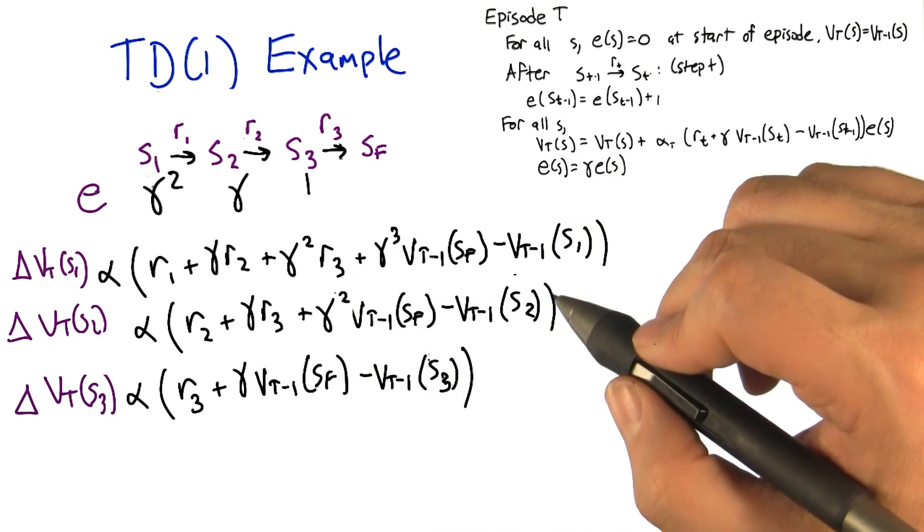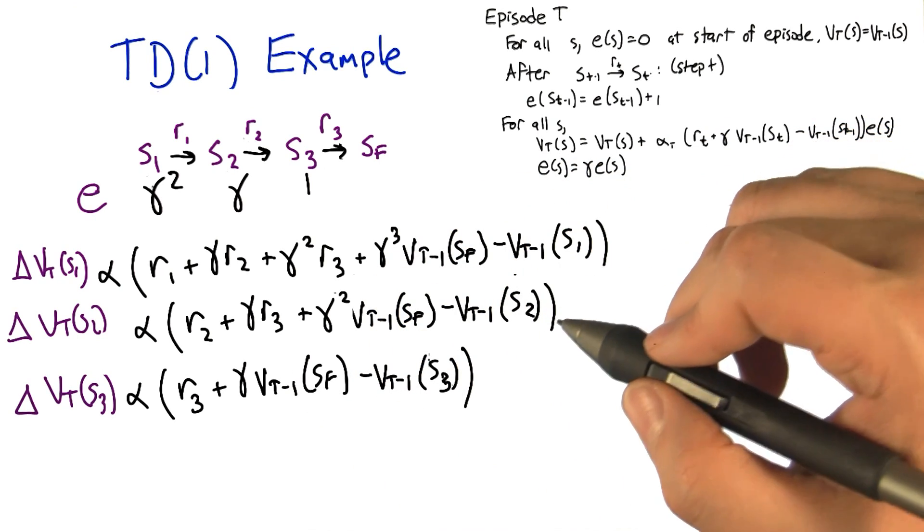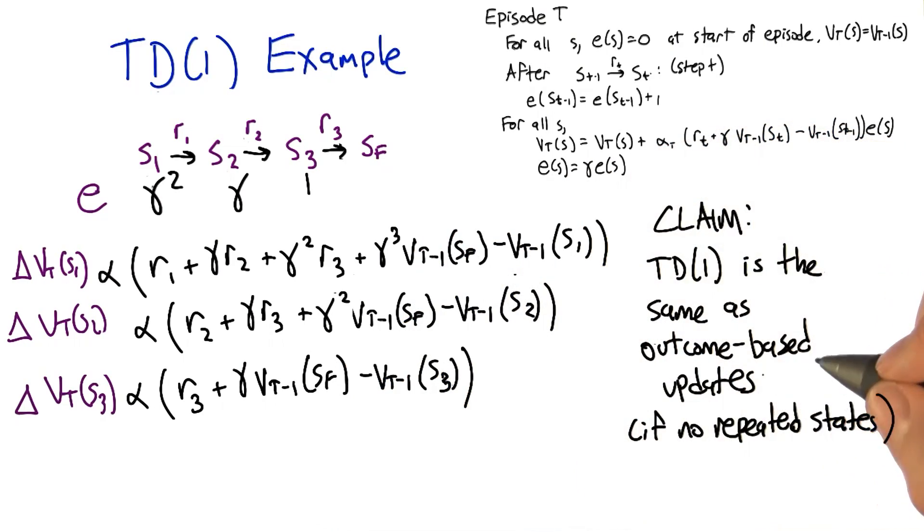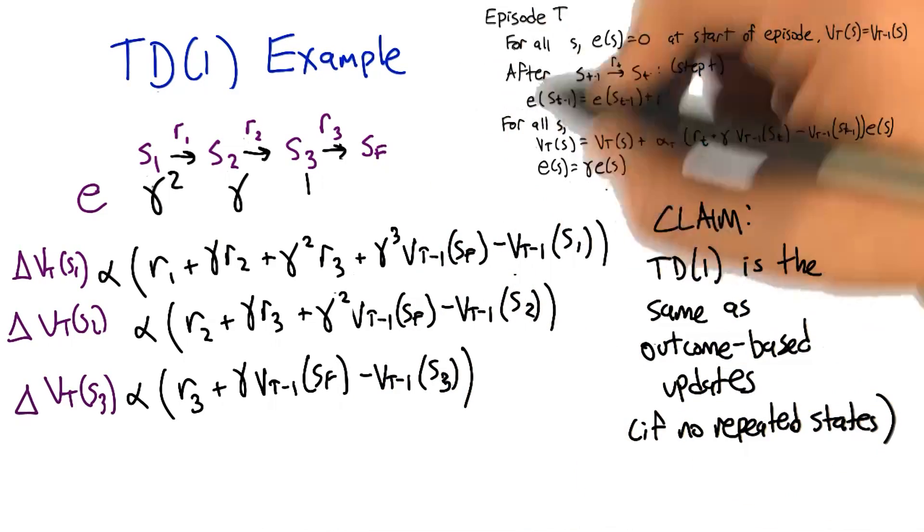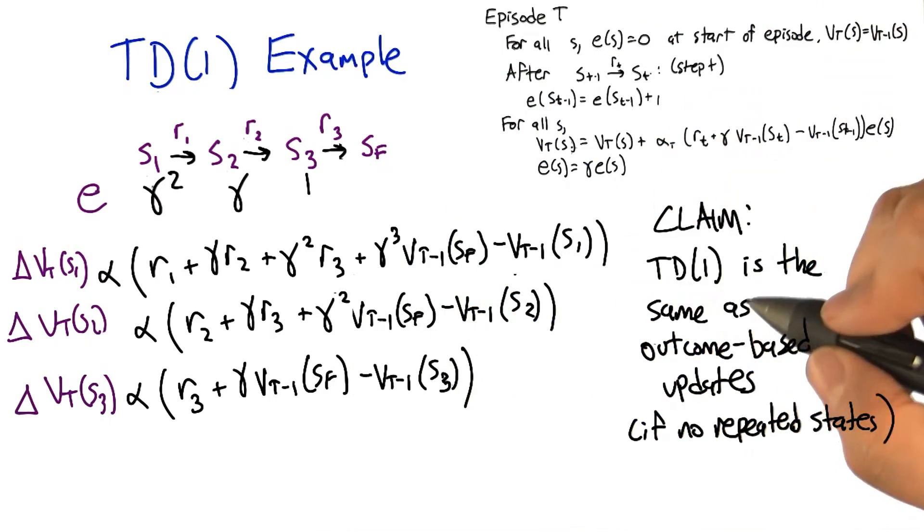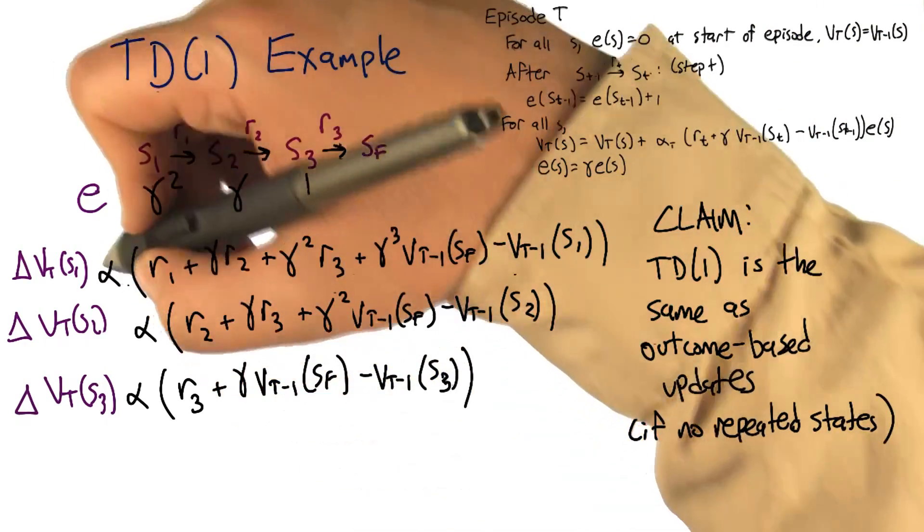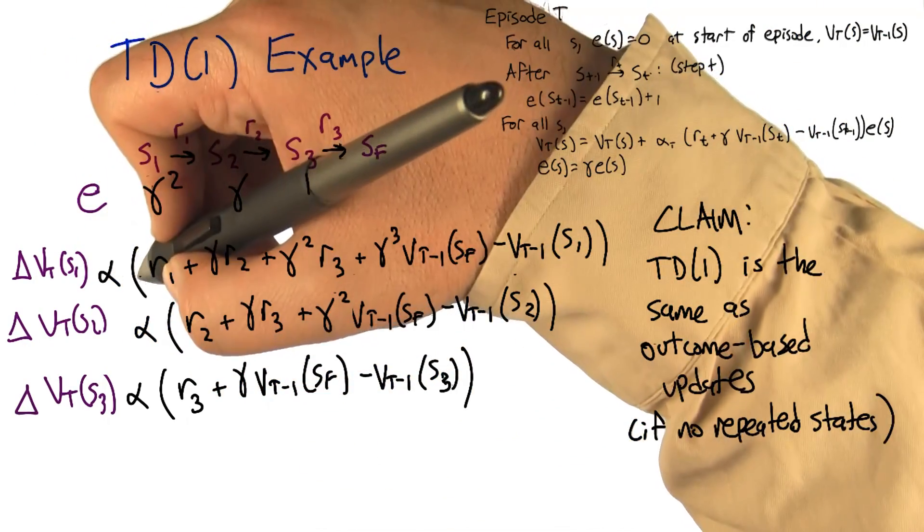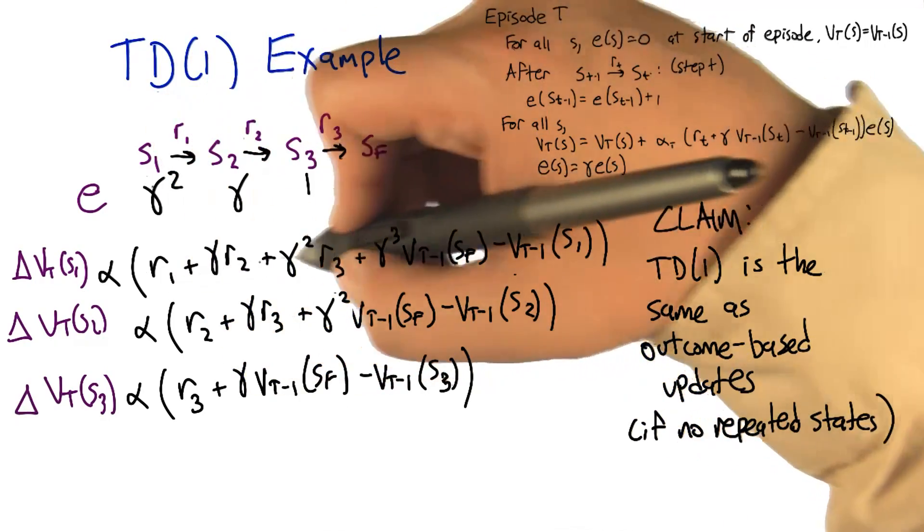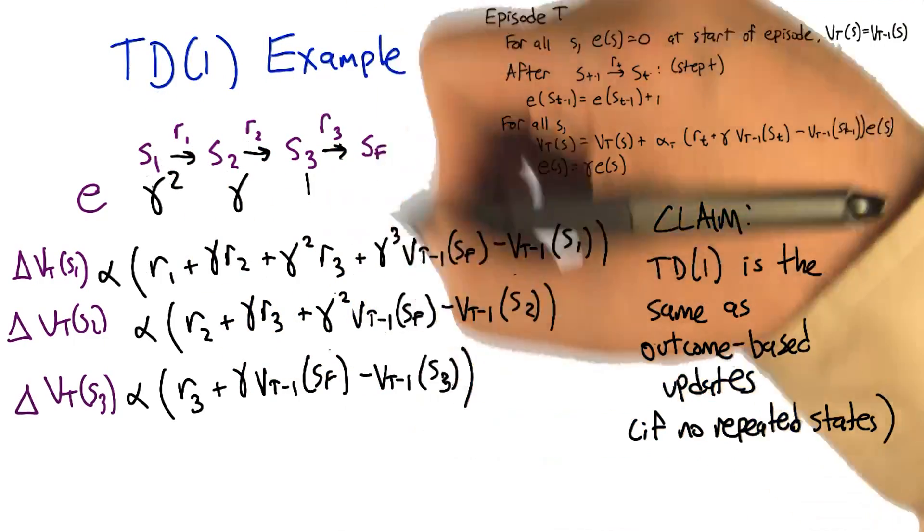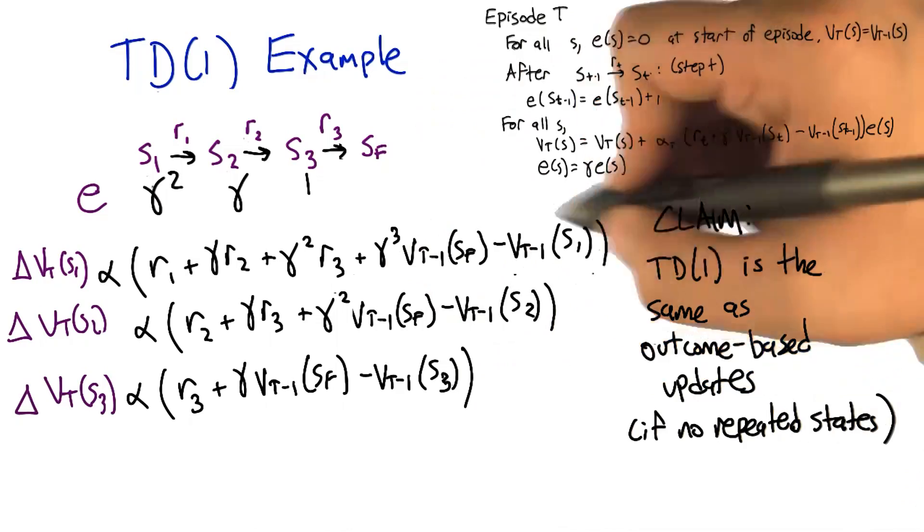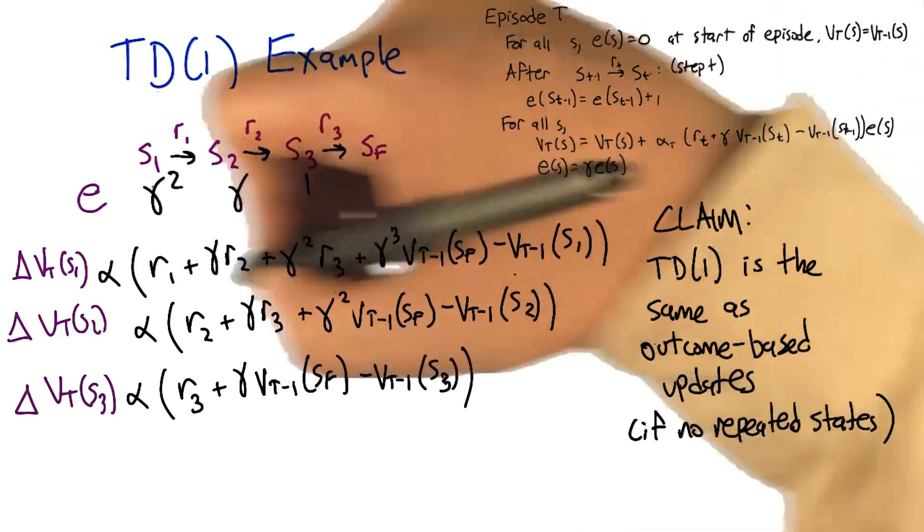So we can now state a claim, which just follows very clearly from the example, and that is that this update, this TD1 update that we just talked about, actually does the same thing as the outcome based update, which is to say we wait to see what all the rewards, the discounted rewards are on the entire trajectory, and then we just update our prediction for the state that they started from with those rewards.